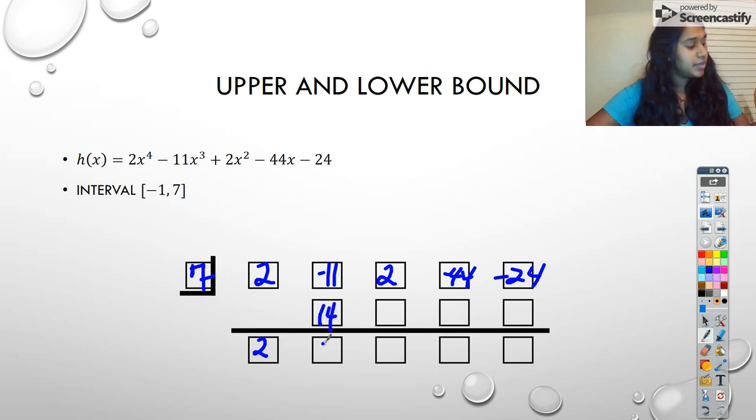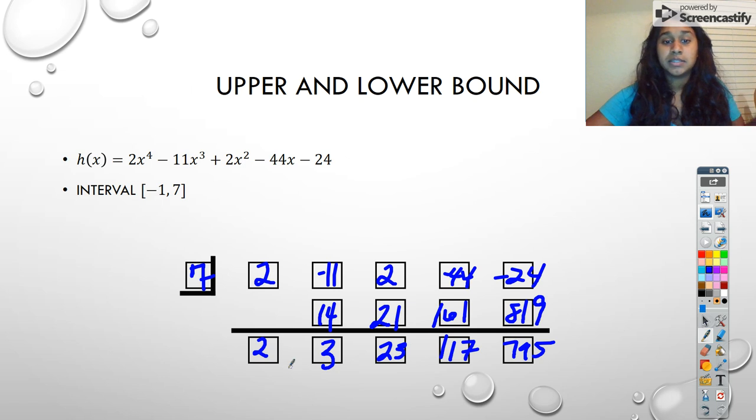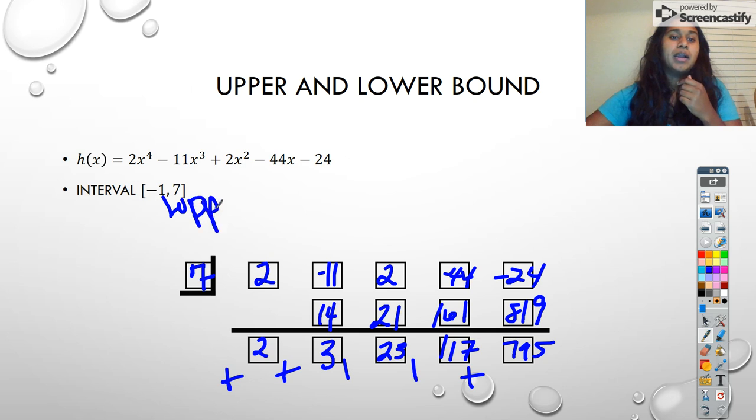I'm going to go ahead and do this synthetic division. That's 14. That becomes 3. That becomes 21, 23, 161, 117, 819, and 795. Again, we're not checking if this is a 0. We're just checking that these are all non-negative. And they are. So this must be our upper bound.